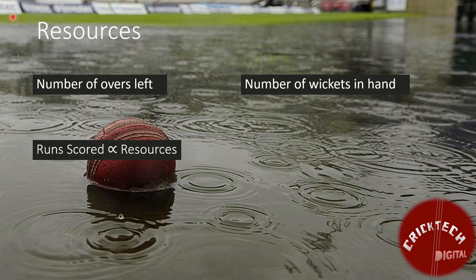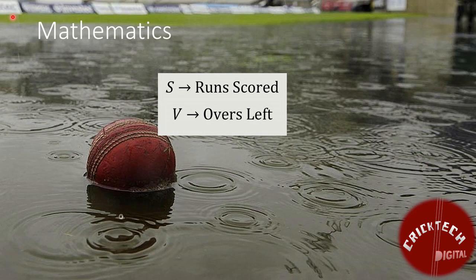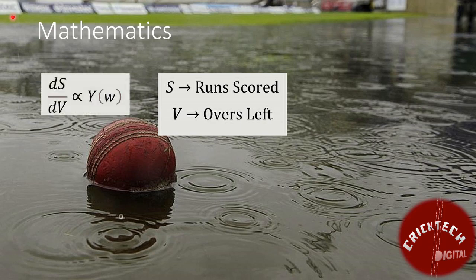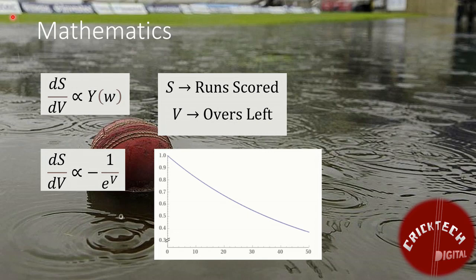Let's go through the math. Here, S refers to the runs scored and V refers to the overs left. In this method, the scoring rate dS/dV is considered proportional to: 1) a function of number of wickets in hand Y, and 2) inversely proportional to exponential of overs left V with a negative sign. The negative sign indicates a positive scoring rate for decreasing overs left.